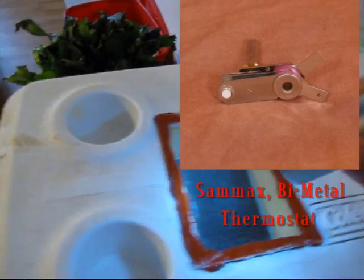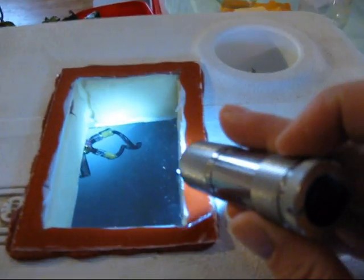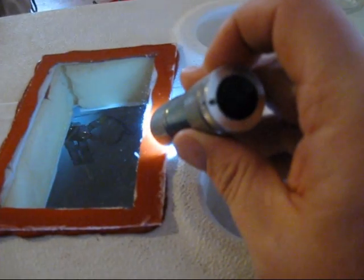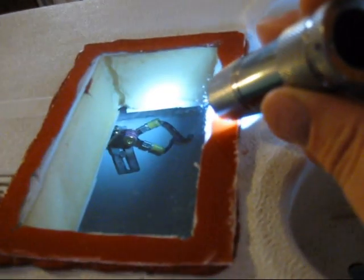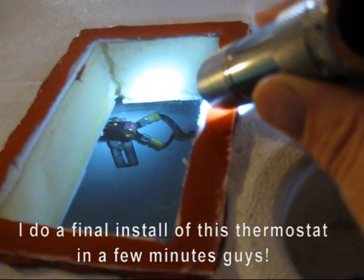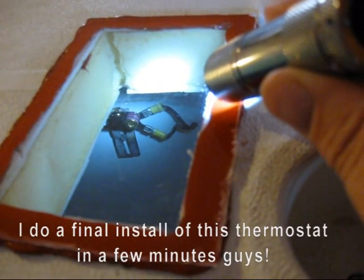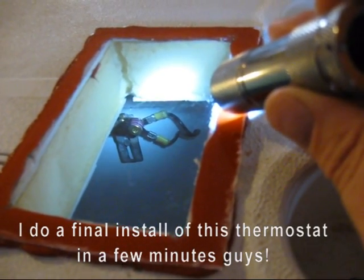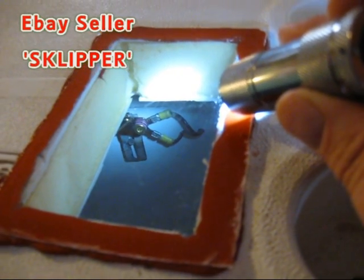See, this one here uses light bulbs as a heat source. I've got a temporary bracket that I've got this little thermostat on. I'm also going to post pictures, the actual eBay auction pictures from this S-Klipper, S-K-L-I-P-P-E-R eBay seller.